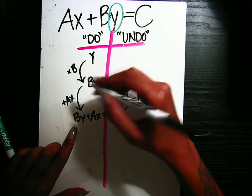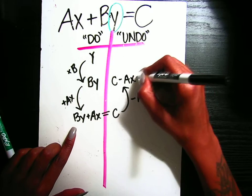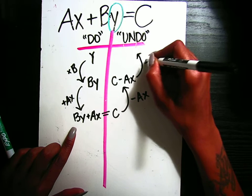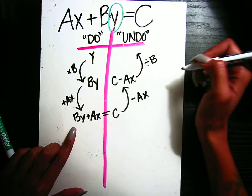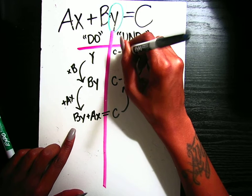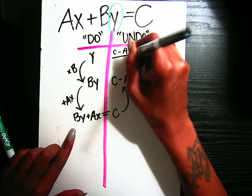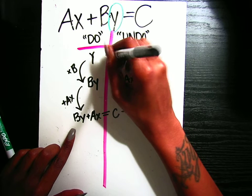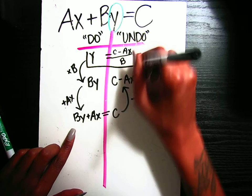And then here, instead of multiplying times B, I'm going to divide everything by B. So C minus AX divided by B. That's what Y is equal to.